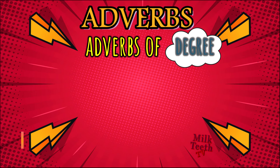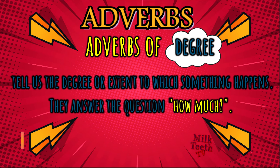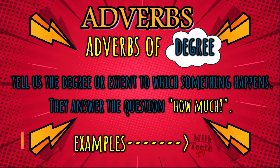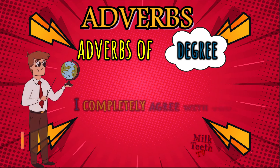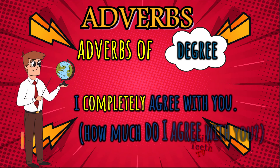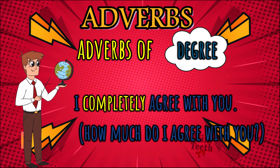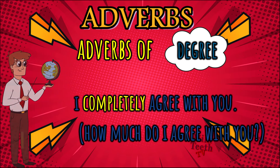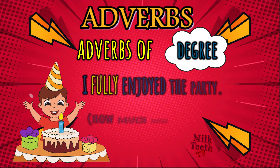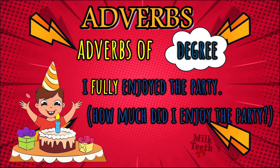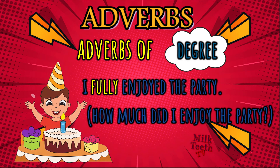Adverbs of degree tell us the degree, amount, or extent to which something is happening. They answer the question 'how much.' For example: I completely agree with you — 'agree' is the verb, and how much do I agree? Completely. So 'completely' is the adverb of degree. I fully enjoyed the party — 'enjoy' is the verb and 'fully' is the adverb telling us how much I enjoyed it.